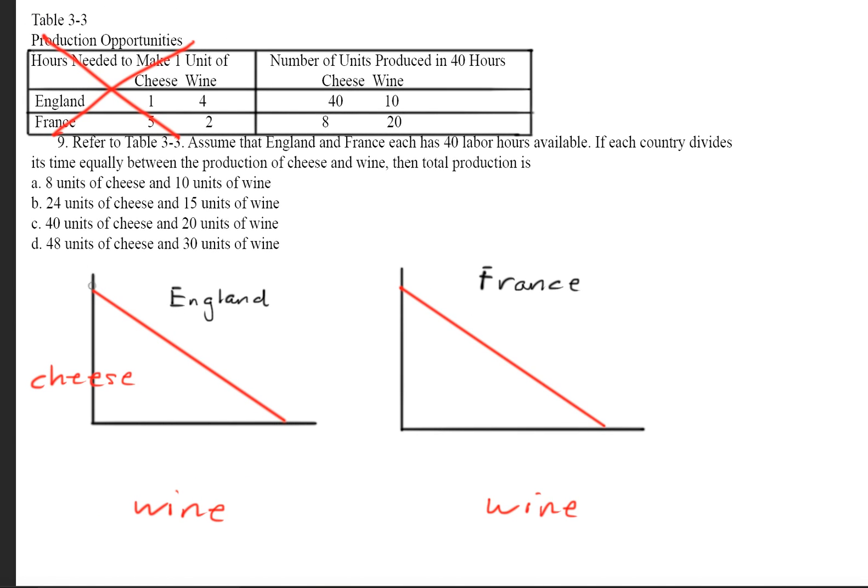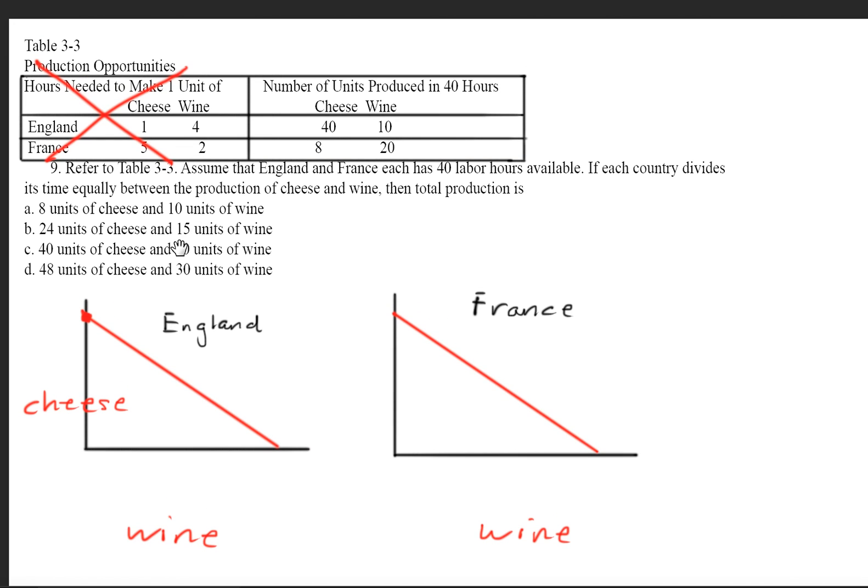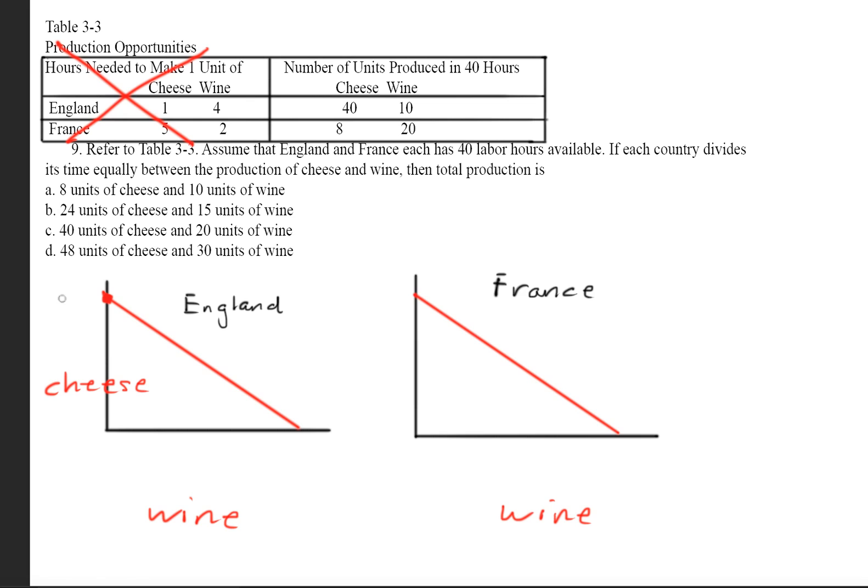So at this point, if England decided to devote all its time into making cheese, at most it can make 40. If it decided to produce only wine, at most it can produce is 10 units.